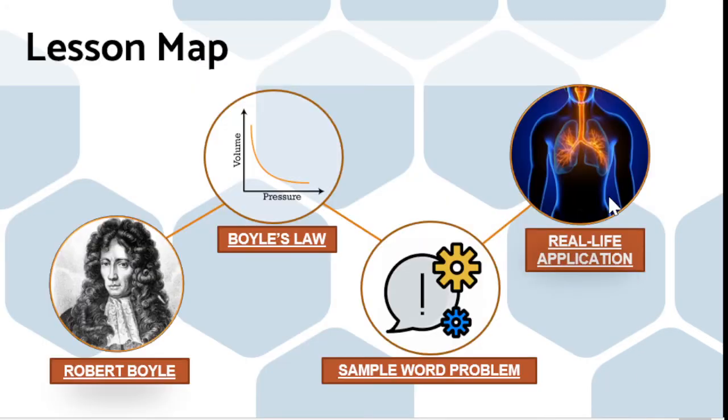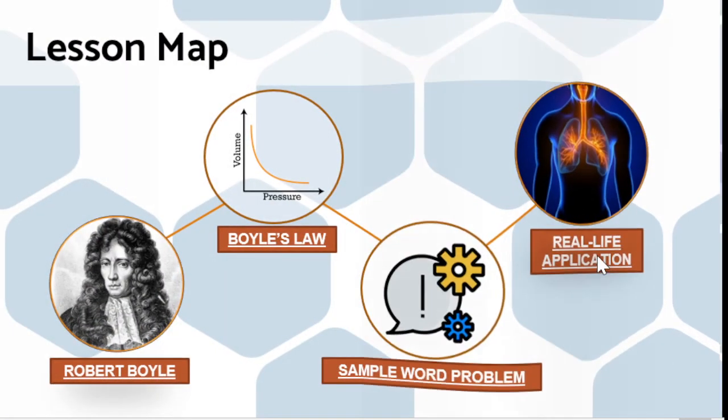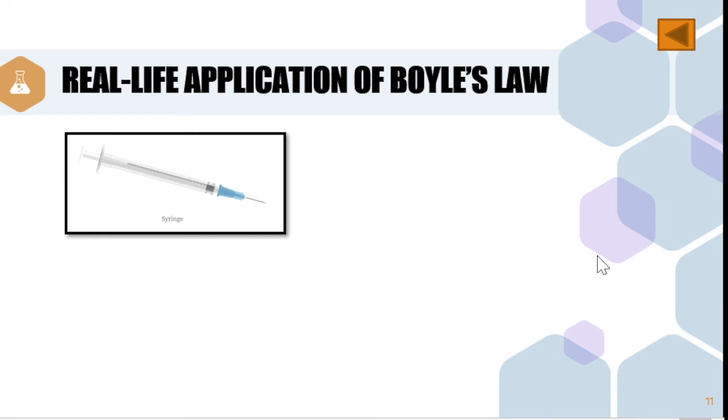Now, let us proceed to the different real-life applications of our Boyle's Law. The first one is our syringe. The working principle of a syringe is like a reciprocating pump. When the plunger is pushed, the fluid will inject, and when the plunger is pulled, the fluid will withdraw. The pushing of the plunger reduces the volume of the fluid in the barrel. This reduction in the volume causes a momentary increase in the pressure of the fluid, and the fluid is injected into the patient's body.